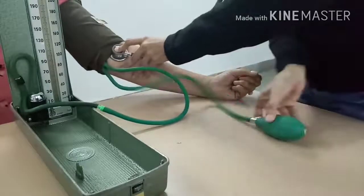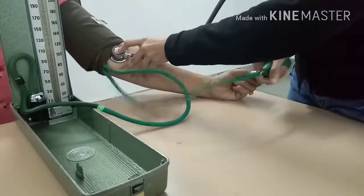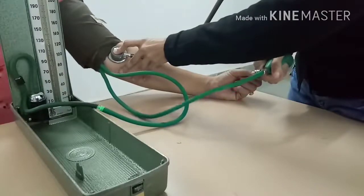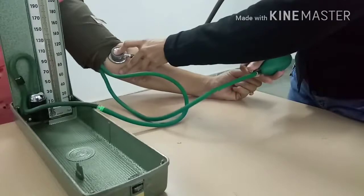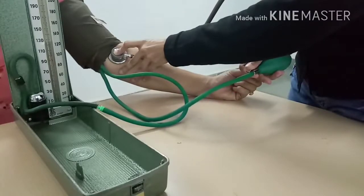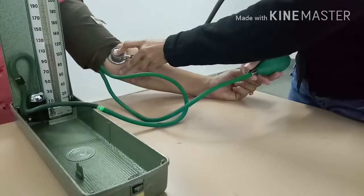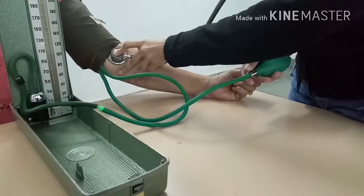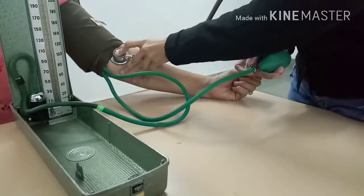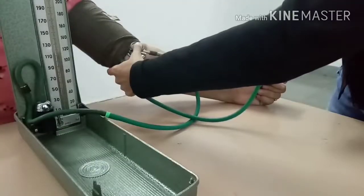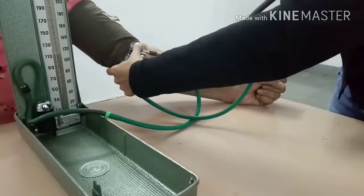Now inflate the cuff to a few millimeters of mercury above the pressure observed by palpatory method, then deflate it slowly and listen to the appearance of a series of sounds known as Korotkoff sounds. The pressure at which the sound appears is the point of systolic pressure.